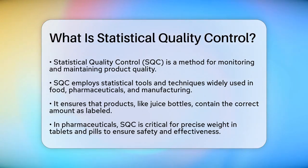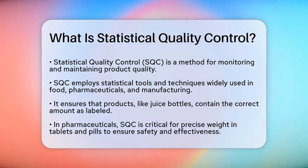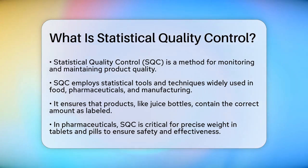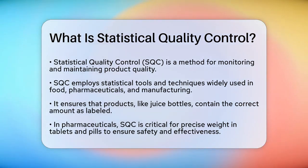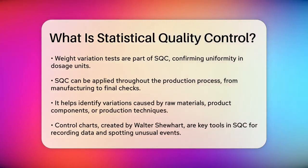Imagine you're producing bottles of juice. You need to make sure each bottle contains the exact amount of juice stated on the label. SQC helps you achieve this by analyzing the weight of each bottle. This process involves checking the weight of individual goods to ensure they meet the required standards.